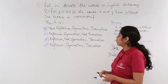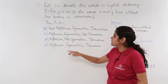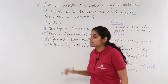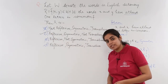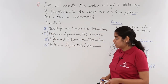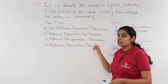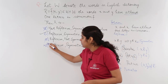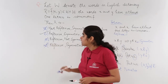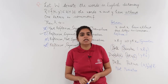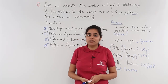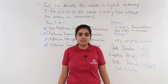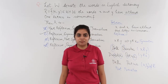So the answer is option B: the relation is reflexive and symmetric but not transitive. I will strike off option D. This was a higher order thinking question on reflexive, symmetric and transitive relations.